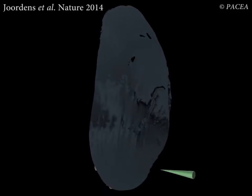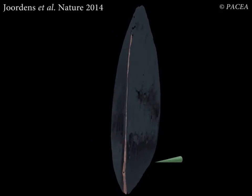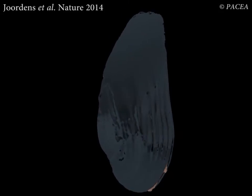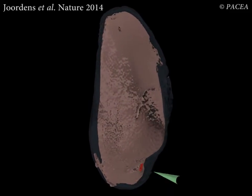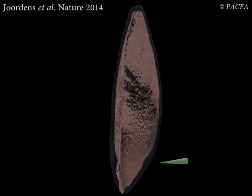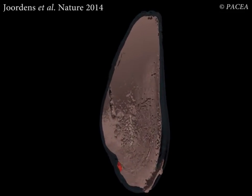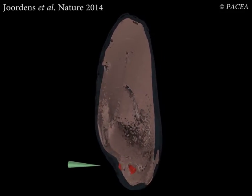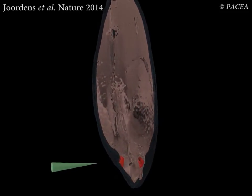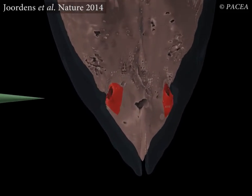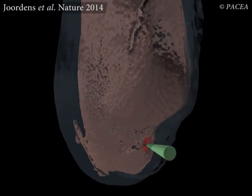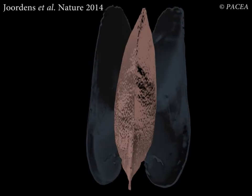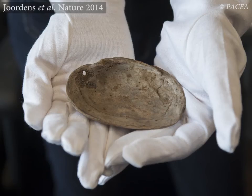A pointed object such as a shark tooth, employed with a rotating motion into the living shell at the location of the anterior adductor muscle, produces a hole similar in size and morphology to the holes from trineal. As soon as the shell is pierced and the muscle has been damaged by the tool tip, the animal loses control of the muscle, the valves part, and the shell can be opened without breakage.